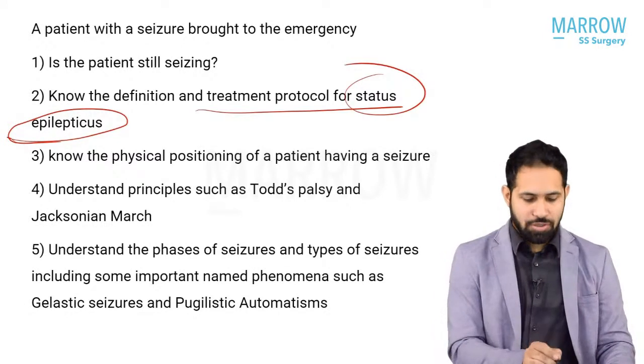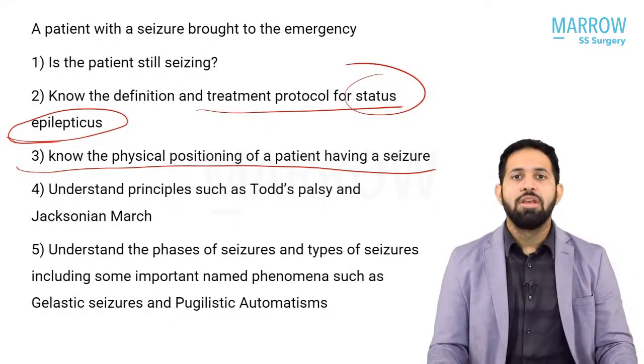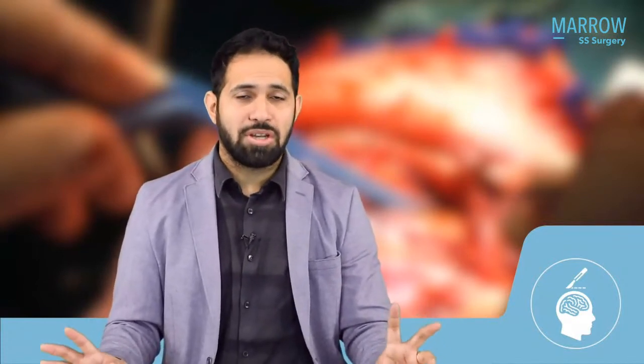If a patient seizes in front of you: make the patient lie down in the lateral or prone position so tongue-fall doesn't obstruct the airway and vomit can drain. Never hold the limbs or head of a seizing patient — the limb will fracture. Place a pillow or your hand under the head to prevent it hitting the ground. Most seizures stop within about 30 seconds. IM midazolam or midazolam nasal spray can be given if IV access is difficult.